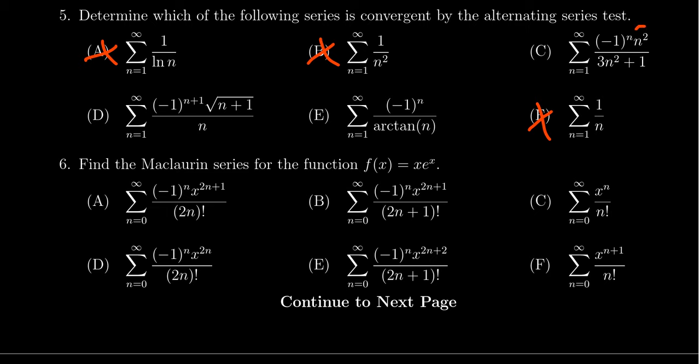And so looking at these ones, we get n squared over 3n squared plus 1. That's a balanced rational function. If you just look at the leading terms, you get n squared over 3n squared, right? That sequence, not the series, but that sequence would converge towards n squared over 3n squared.